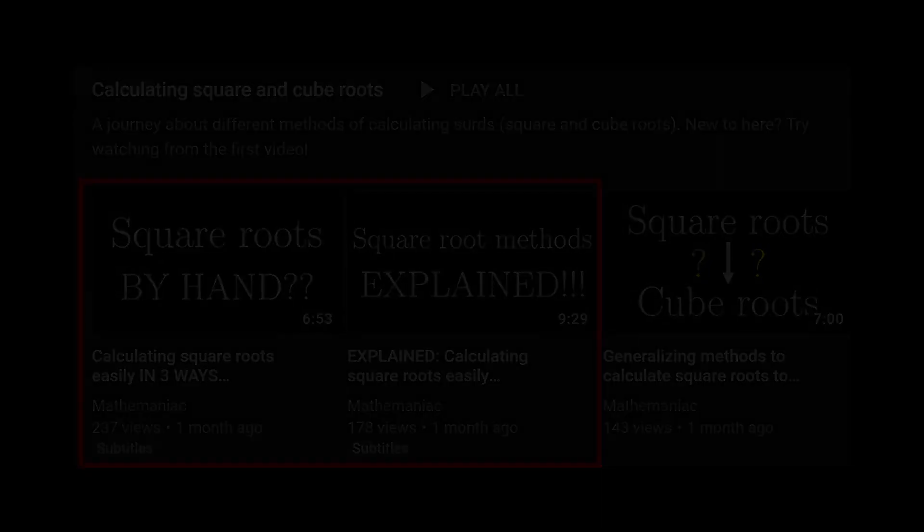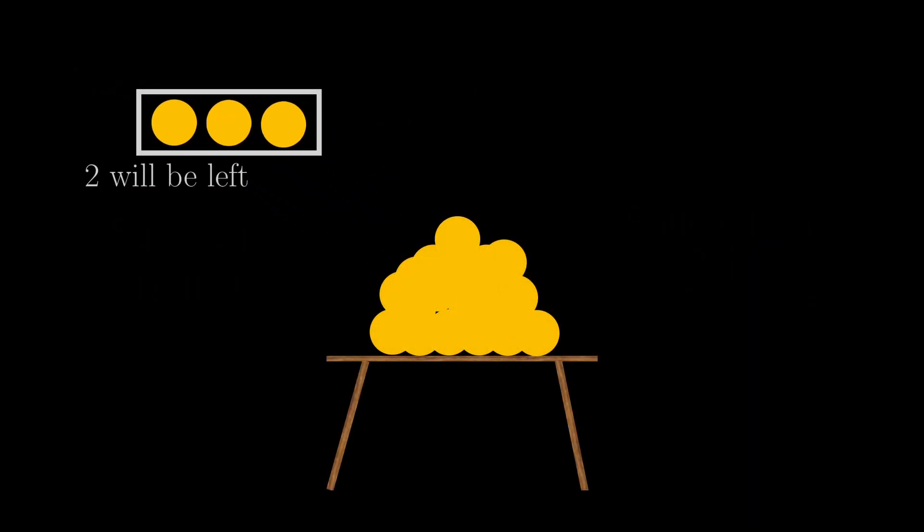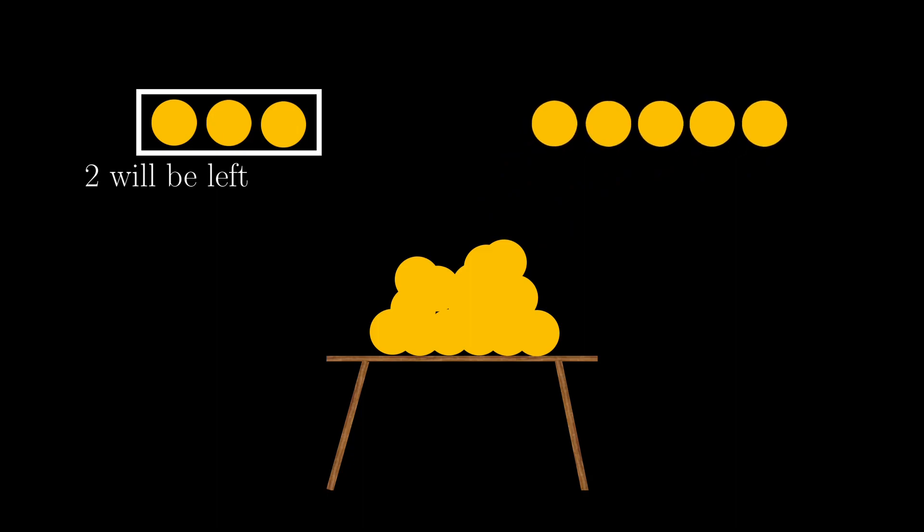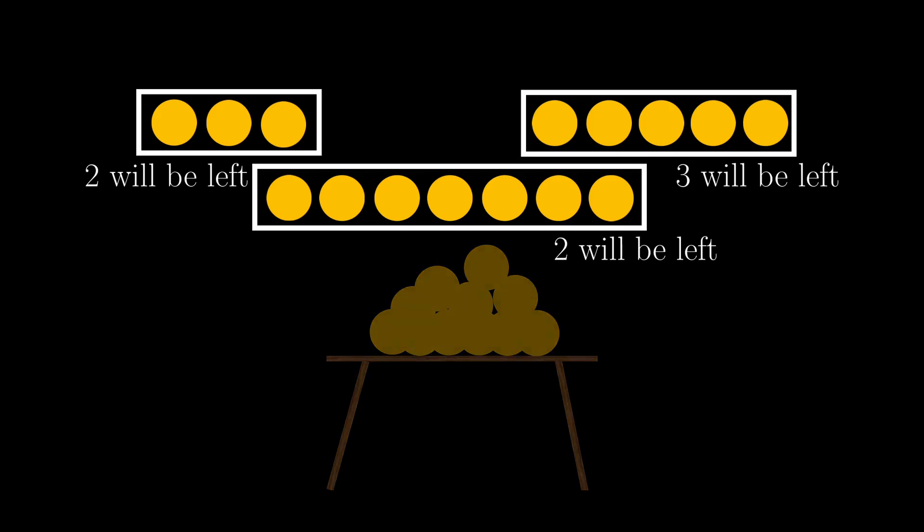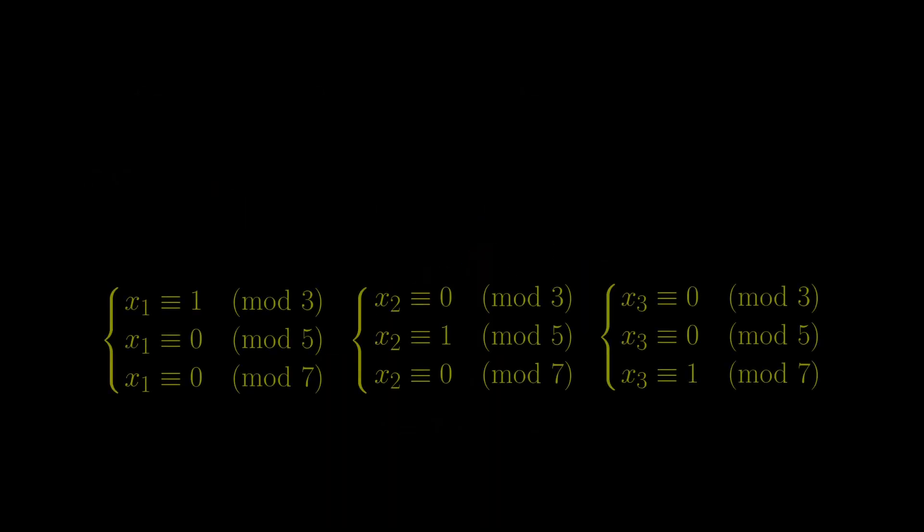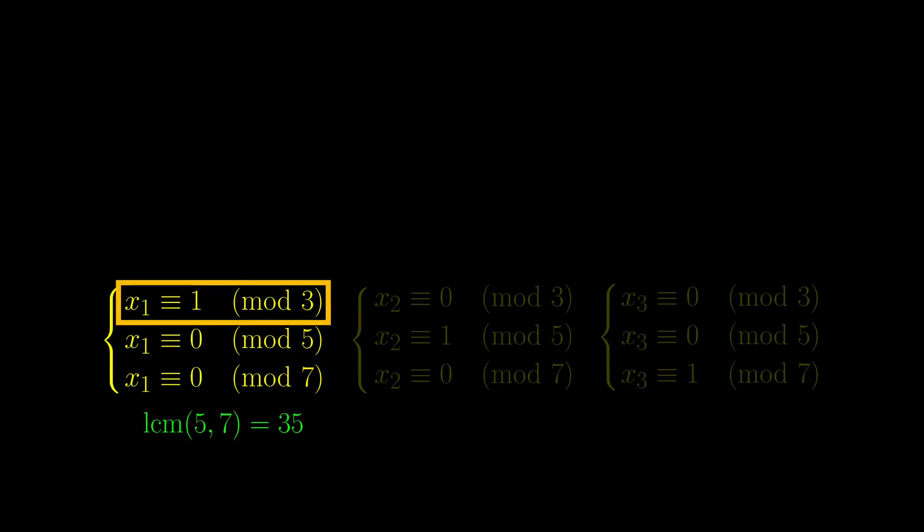We are now going to do an actual implementation of this entire solution on the ancient Chinese problem we started off with. We need to find solutions to these three sets of equations first. For the first set, x1 is congruent to 1 modulo 3 and divisible by 5 and 7. 35 is not congruent to 1 modulo 3, so 35 is not the solution here. What about 70? 70 is definitely congruent to 1 modulo 3, so we set x1 to be 70.